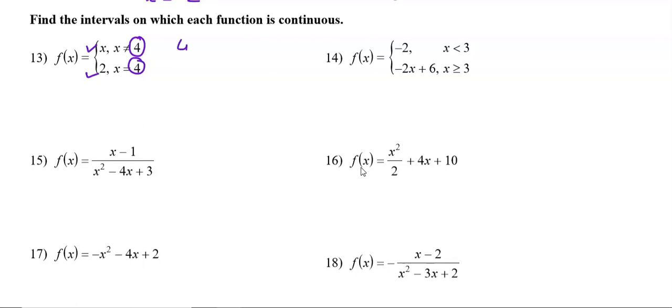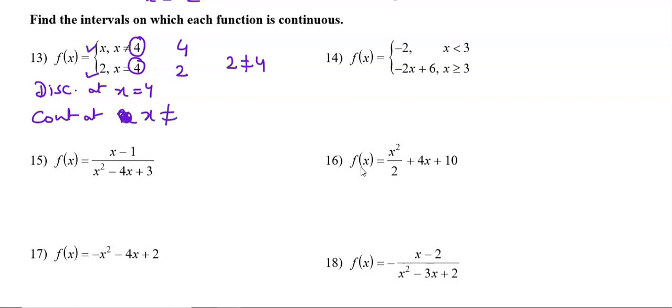The first function at x = 4 gives 4, and the second function gives 2. These two values are not the same, so the function is discontinuous at x = 4. Since it is discontinuous at 4, it must be continuous at all other values except 4.